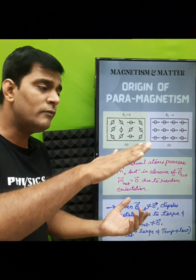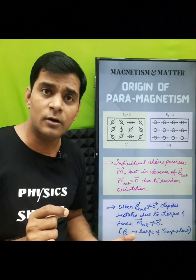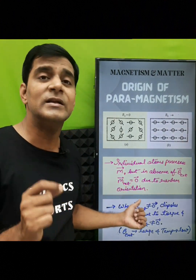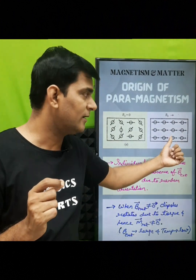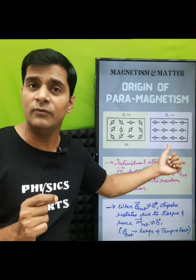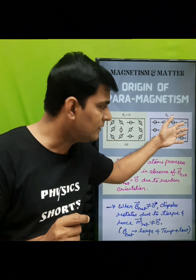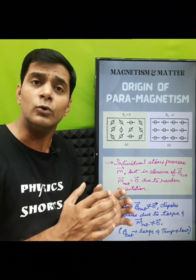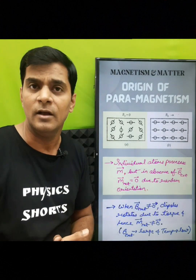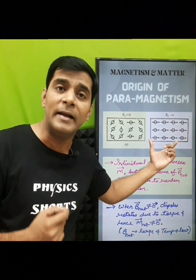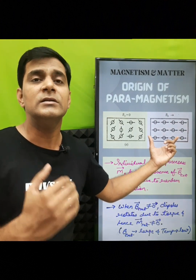But when some external field is applied, the dipoles experience a torque, and due to that torque the dipoles orient themselves in the field direction, as shown in this diagram. For a sufficiently high magnetic field, all dipoles will orient in the field direction, showing attraction, and this magnetic material will become magnetized.